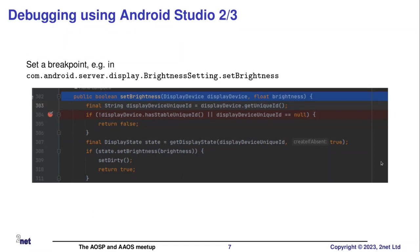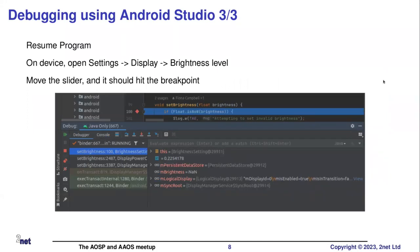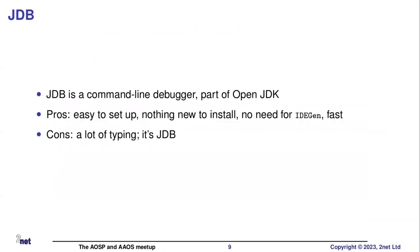Then you can navigate through to the code you want to debug — in this case, maybe setBrightness. I've set a breakpoint on 'displayDeviceHasUniqueUID' and so on. Then I can resume the program, go into the Settings app and change the brightness level, and we will hit the breakpoint. And it's a breakpoint — I can now see the brightness was 0.2254178. I can debug stuff.